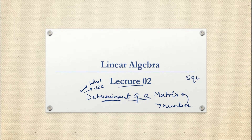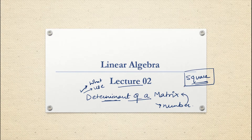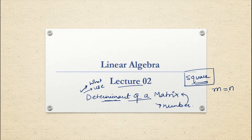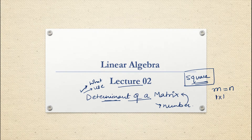For a square matrix only, we can find the determinant. The matrix should be a square matrix to find the determinant. The number of rows and number of columns of any matrix must be the same — then we call that matrix a square matrix. Examples of square matrices are: 1×1, 2×2, 3×3, and so on.